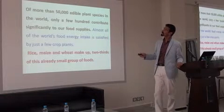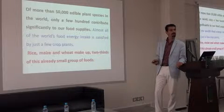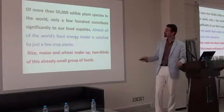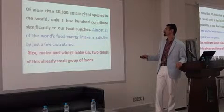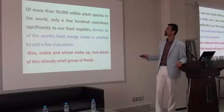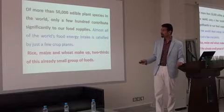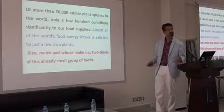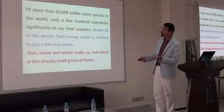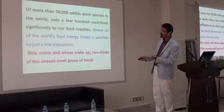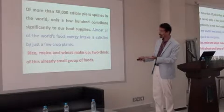Of more than 50,000 known plants on the Earth, in Iran we just use a few to satisfy the energy needs of the people — rice, maize, and wheat. These are the main ones, and many governments are supporting them. For instance, in Iran there is too much support for wheat production.